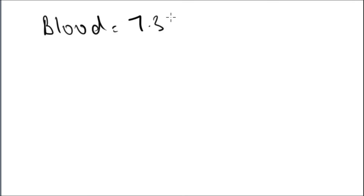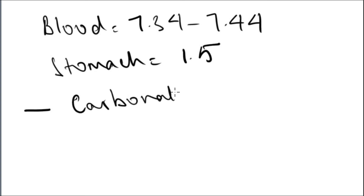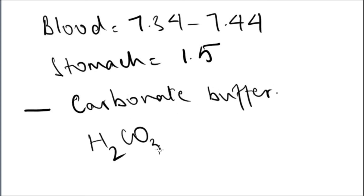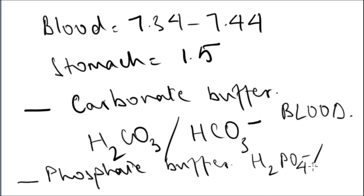You need to know the pH of a few biological systems. Blood has a pH of 7.34 to 7.44. The stomach normally has a pH of 1.5 but can vary from 1 to 3. There are two main buffers in our body: the carbonate buffer, found in our blood and lungs — carbonic acid with hydrogen carbonate — and the phosphate buffer, mainly in our kidneys, which involves phosphoric acid.